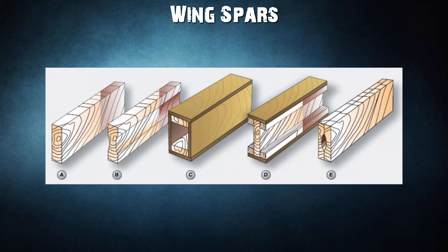Wing Spars. Spars are the principal structural members of the wing, corresponding to the longerons of the fuselage. They run parallel to the lateral axis of the aircraft, from the fuselage toward the tip of the wing, and are usually attached to the fuselage by wing fittings, plane beams, or a truss. Spars may be made of metal, wood, or composite materials depending on the design criteria of a specific aircraft.